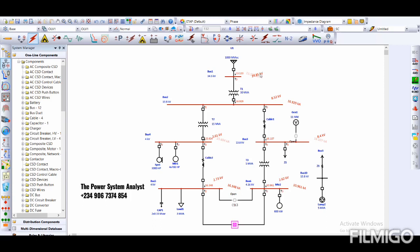So for bus one you can see it has a voltage of 24.85 kilovolts for maximum and 13.133 kilovolts for the fault current. Same thing for bus two, 8.52 kilovolts and 16.929 kilovolts.